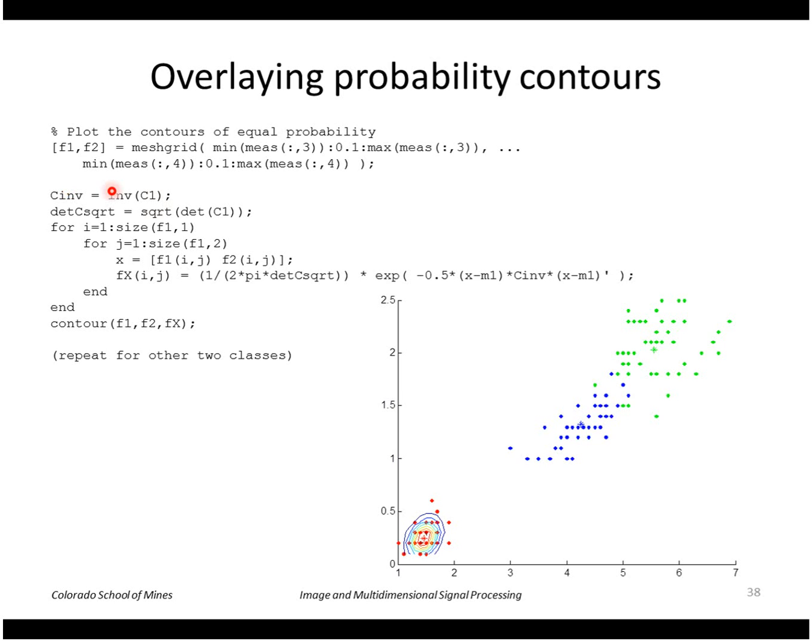I use the COV function and plot contours of constant probability here. So as you can see, class one is tightly grouped, so the probability has a nice isolated peak over here.